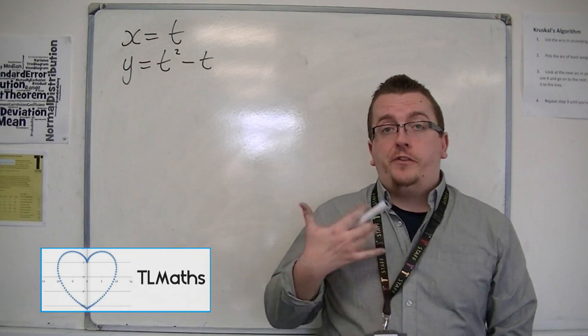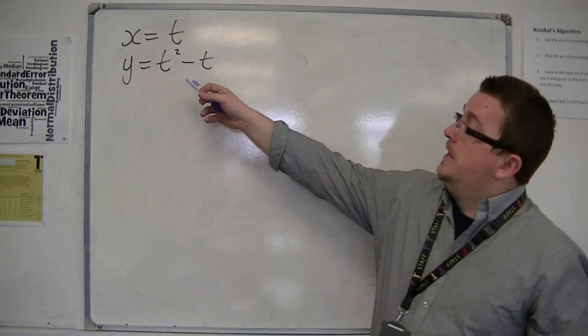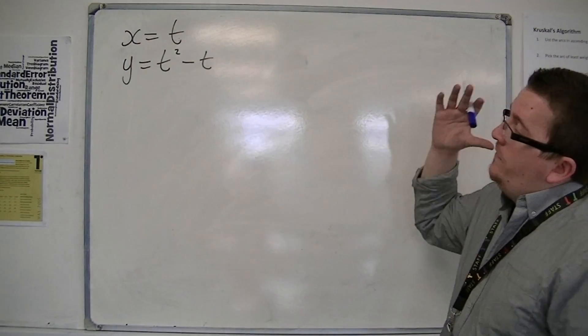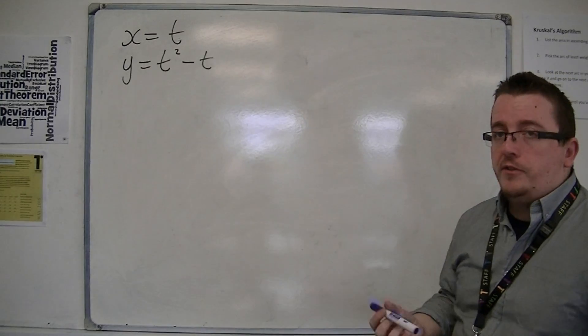Let's say I want to find the stationary points of a curve defined by these two parametric equations. We have x equals t and y equals t squared minus t.